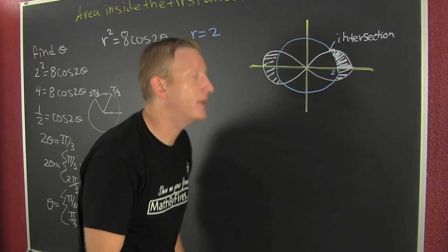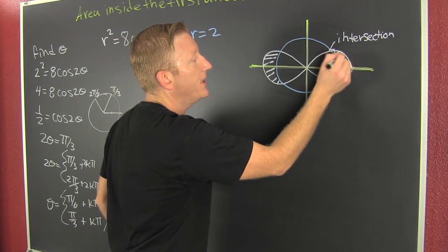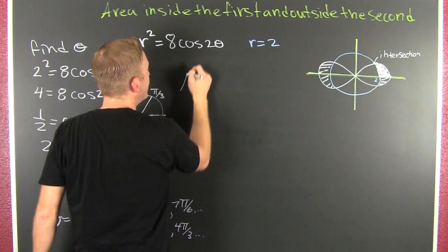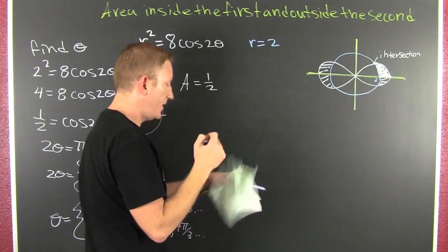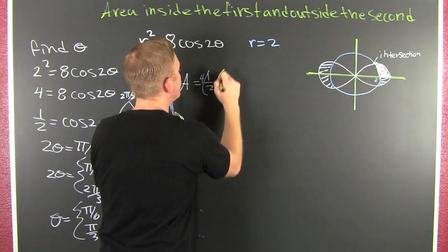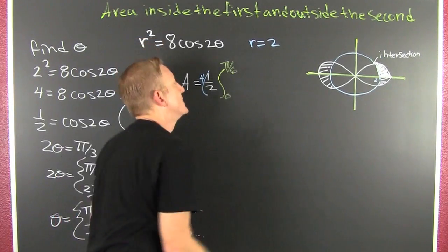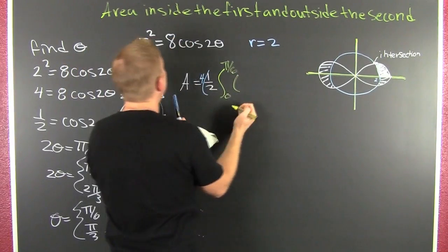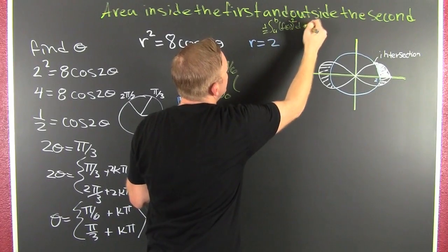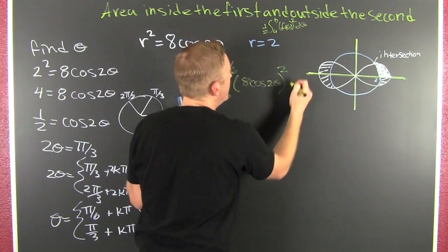How are we going to get this area? I suggest we do it the nicest way possible. I'm going to take 4 times the integral from 0 to pi over 6 — just get this one sliver and multiply by 4 due to symmetry. So the area is 4 times one half, integral from 0 to pi over 6 of 8 cosine 2 theta — which is already r squared — d theta.